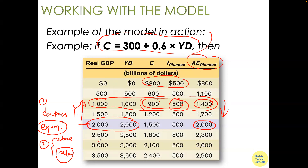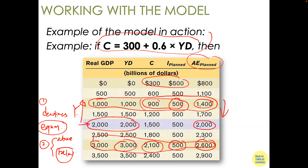On the other side, if real GDP is 3,000 — 3 trillion dollars of goods — income is 3,000, you spend 2.1 trillion, investment is 500 billion, total demand is 2.6 trillion. You produce more than is demanded, inventory piles up. Like having lots of cars you can't sell, you tell the manufacturer to slow down. You move in the other direction until you hit the equilibrium.